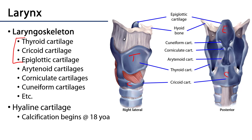The remaining cartilages are all bilaterally paired. Sitting atop the posterior aspect of the cricoid cartilage are the arytenoid cartilages, which are sort of funnel-shaped. Atop the arytenoid cartilages are the corniculate cartilages. Between the arytenoid cartilages and the epiglottis are the aryepiglottic folds, and within those folds are the cuneiform cartilages. There may be other smaller cartilages that more or less typically appear throughout the larynx.